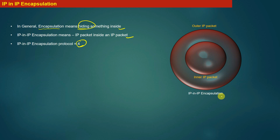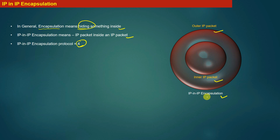As shown in the diagram on the right hand side, when IP in IP encapsulation happens a packet has two headers. After the Ethernet header, the packet has an outer IP header, followed by an inner IP header. The inner IP header and the application data together form the payload of the outer packet.